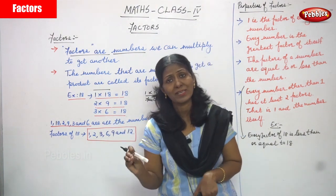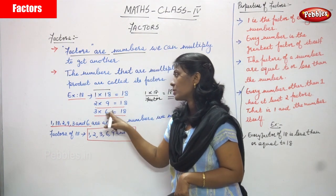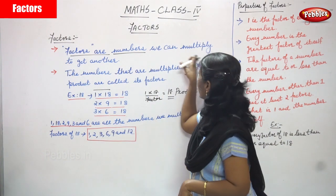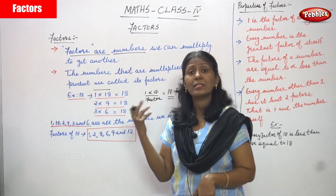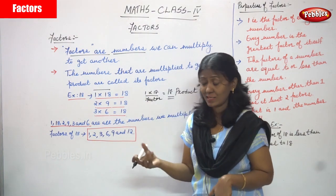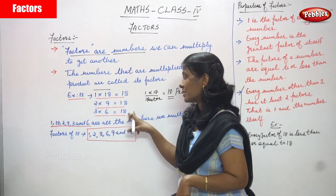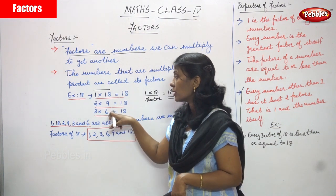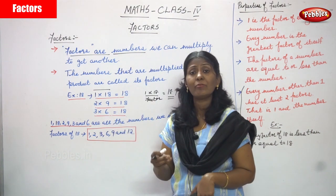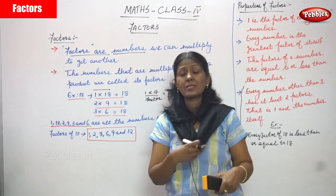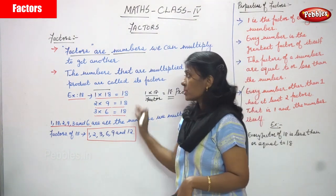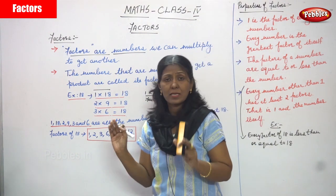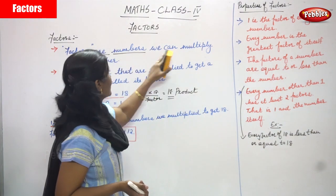So 2 and 9 are called factors because they are multiplied to give the product 18. Similarly, 3 into 6: these two numbers are multiplied to get the result 18, which is the product. So 3 and 6 are also factors. These are the definitions of factors clearly explained.